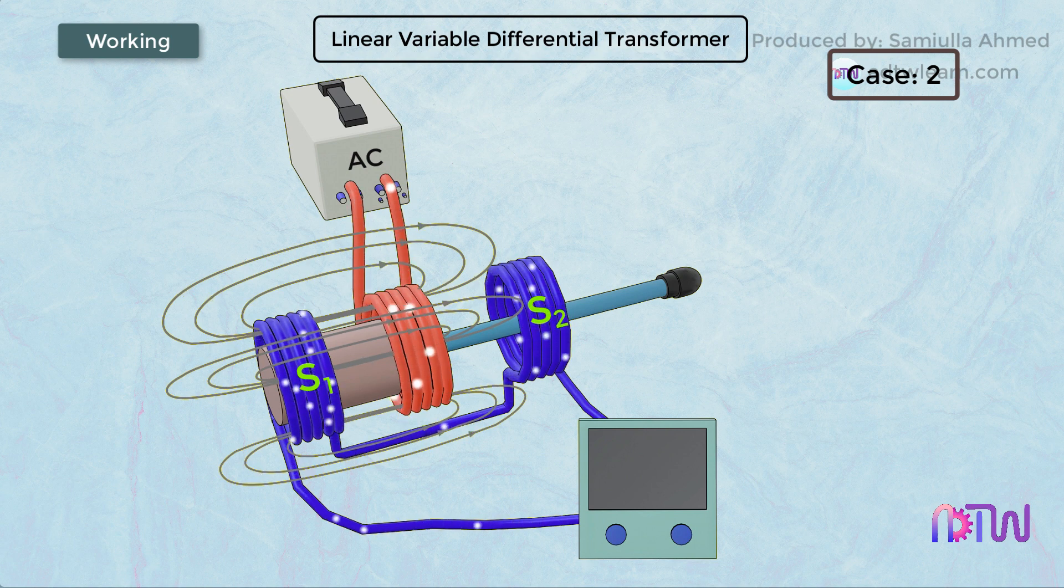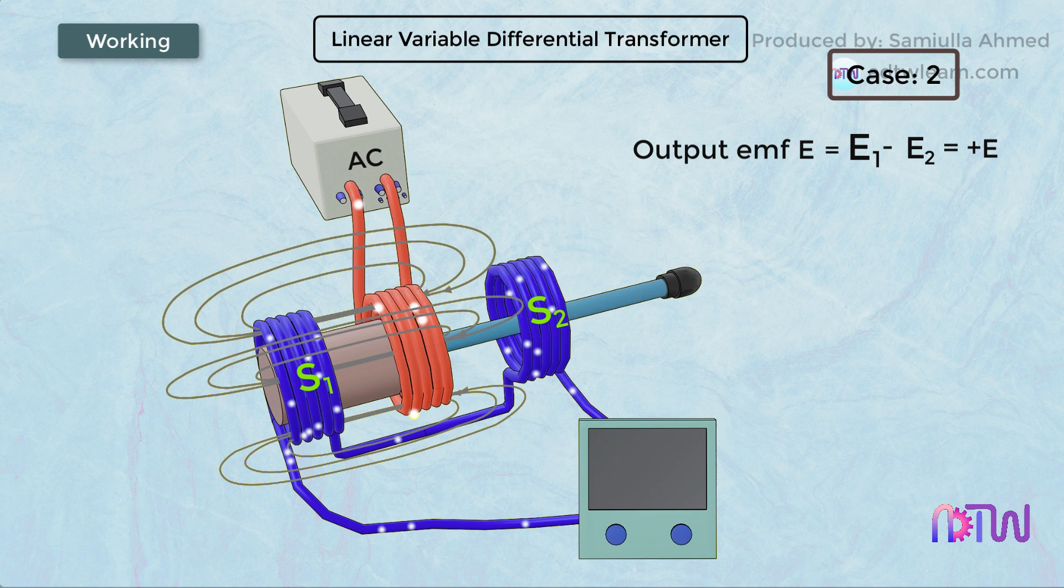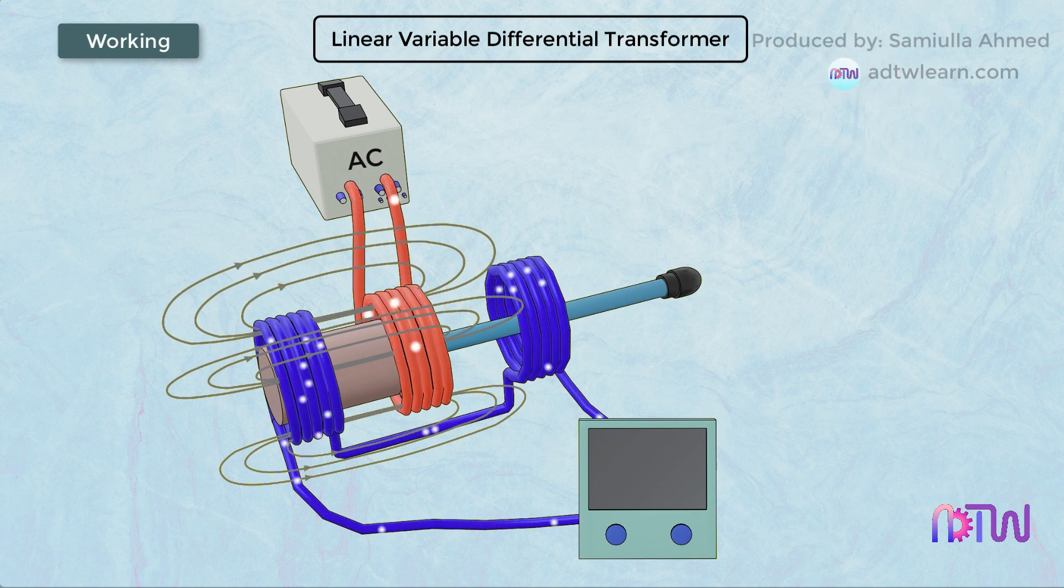Therefore, the net output voltage from the secondary coil will be positive. That is, output EMF will be equal to S1 minus S2, which will be equal to positive.